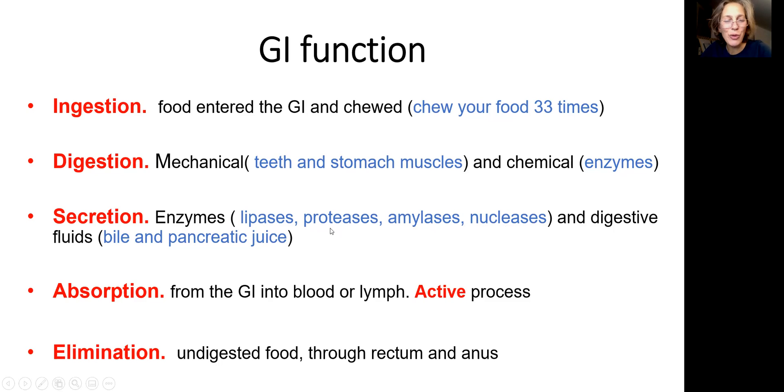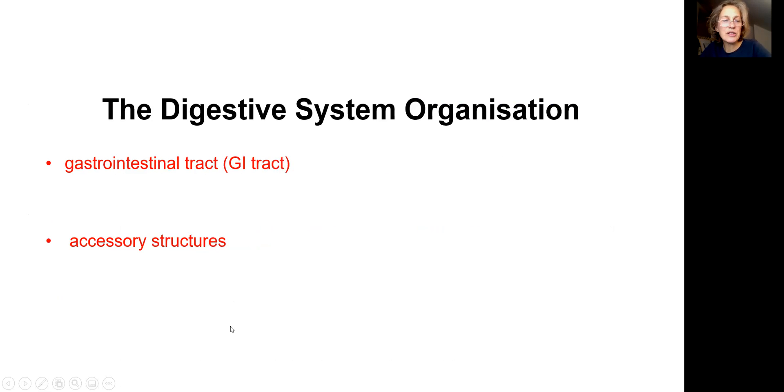Important to remember, I will be talking about them in the next presentation. And fluids: bile and pancreatic juices. Absorption is done through the wall of the digestive tract into the blood and lymph. Elimination is again rectum and anus.